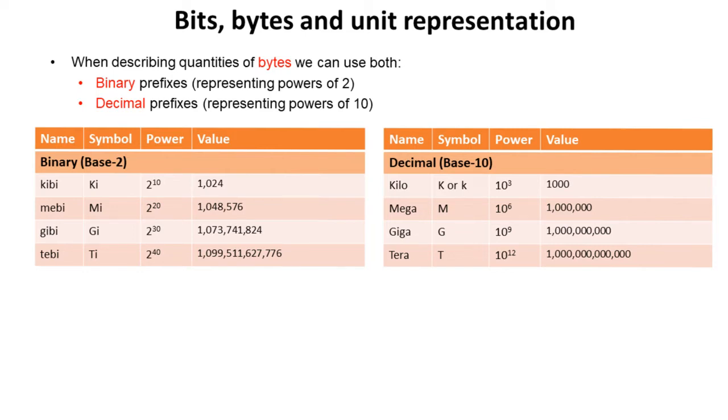So in base 10 decimal, the value of 1,000 can be referred to as a kilo. 1,000 kilos is a mega, 1,000 megas is a giga, and 1,000 gigas is a tera.